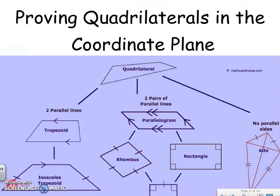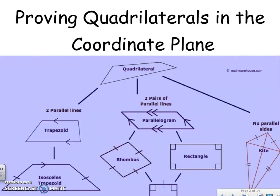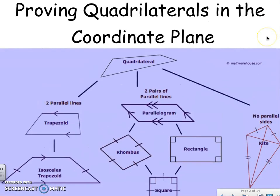Now that you have learned every single quadrilateral, we are going to prove them on the coordinate plane. We're going to be graphing them, looking at slopes, distance, midpoint, and things like that to prove that they are actually the shape that they say they are. So let's look at how to prove them.